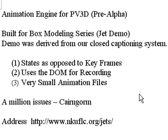Of course there's a million issues — it's a pre-alpha. It's only about 1,200 lines of code and I wrote it in about two days. We're going to come along and put the Cairngorm architecture on top of it next, so I didn't pay a lot of attention to scoping the variables, and you'll see that in the code. If you want to test it out, the address is www.nkuflc.org.